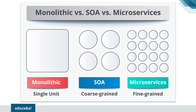Now let's go on to SOA, which is nothing but service oriented architecture. With SOA, the entire software application is not built as one — the different features and services are broken down into smaller components. That's why it's called coarse-grained architecture. If a software application provides four or five features, then all those features are delivered by four different services, as you can see here.